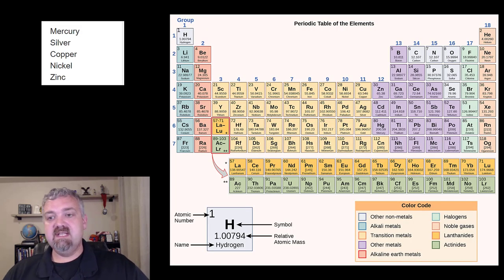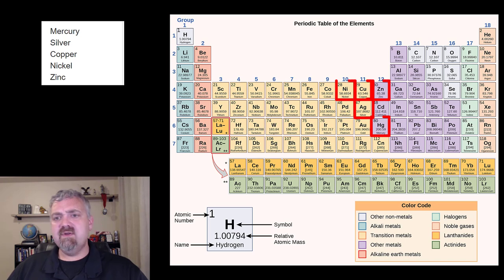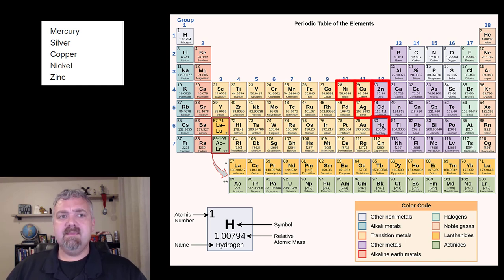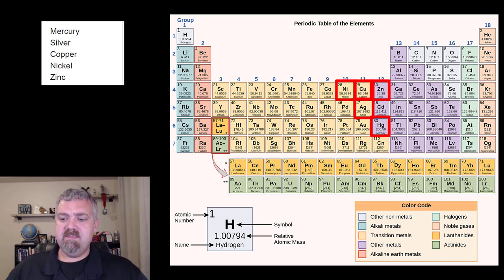Here we just see the periodic table, and again you can see mercury, silver, copper, nickel, and zinc being your heavy metals.